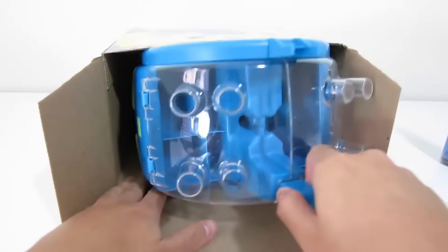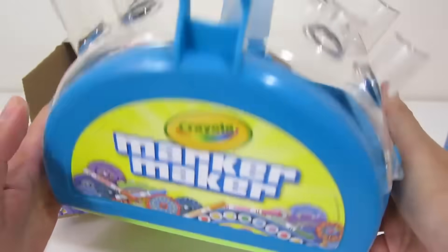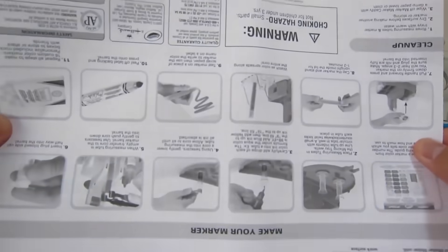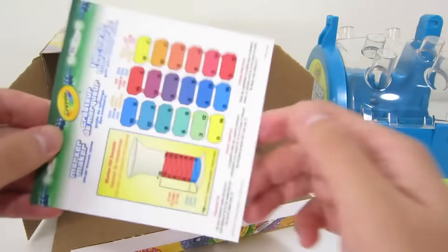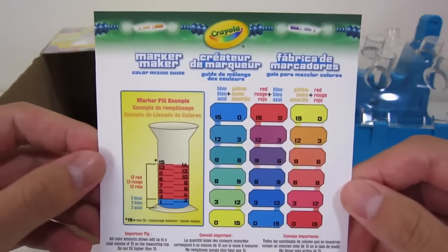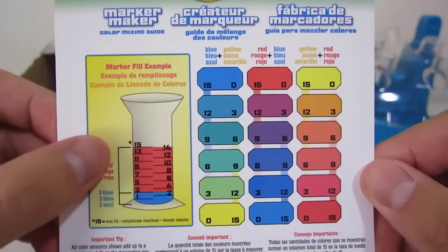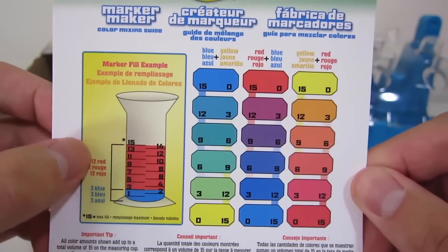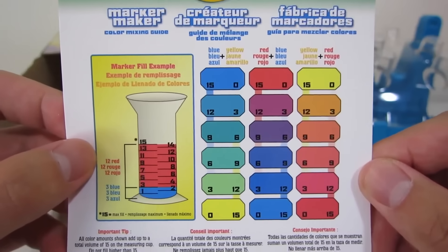And here's our marker maker set. Cool! And here's the instructions. And here's our color guide. It tells us how much blue, yellow, and red we need to make each color. They all add up to 15, so keep that in mind.